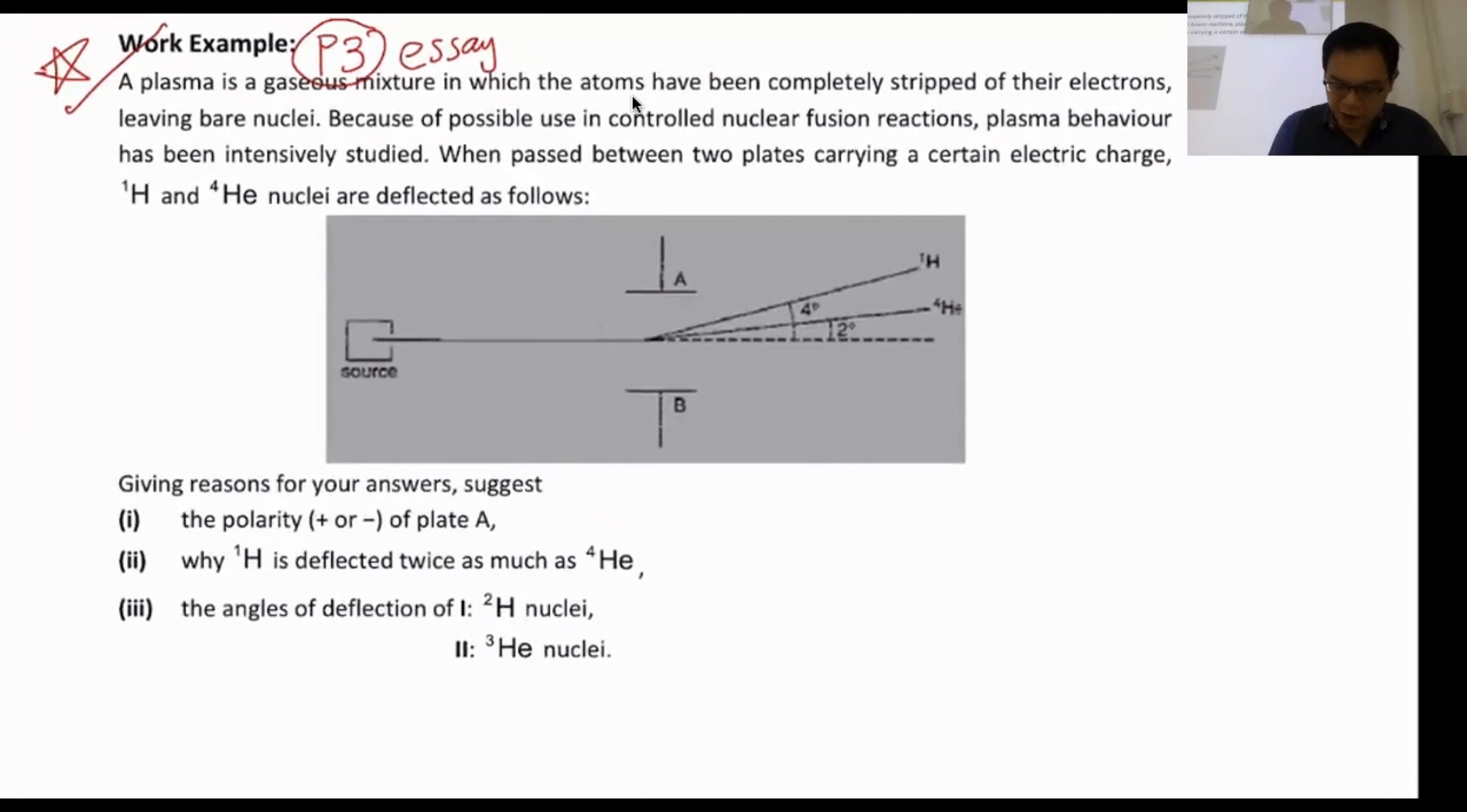Now, first of all, let's take a look. They say that a plasma is a gaseous mixture in which the atoms have been completely stripped of their electrons. So let's take a look here. If you strip off the electron, what does it mean? That means that there's no more electron, it's only a nuclei. Nuclei only contain proton and neutron. Now, if you only have proton and neutron, that means I can determine the charge based on my proton because neutron is zero in charge. So keep in mind, this one has no electron.